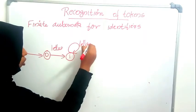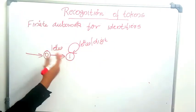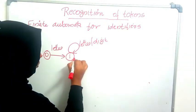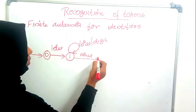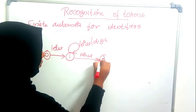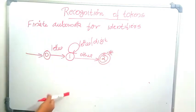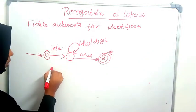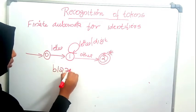The loop in the automaton means any number of letters and digits can follow. If we get something other than a letter or digit, that character is not part of the identifier. We go to a final state but retract, because we have read one extra character. For example, if the identifier is 'b123c', we process each character in the loop.